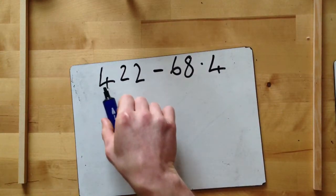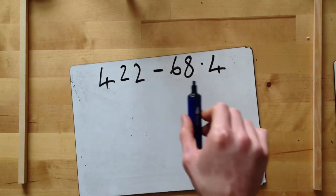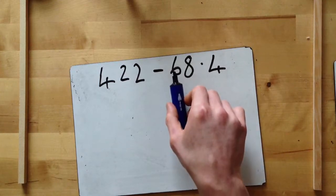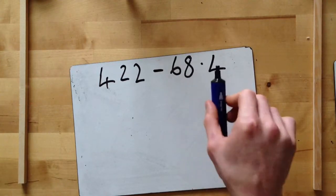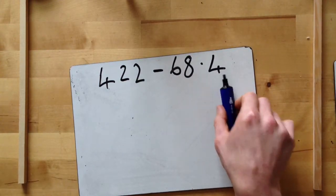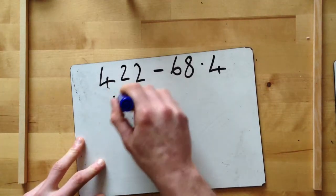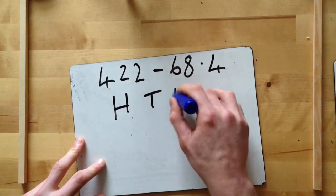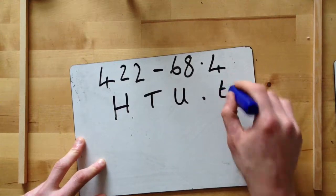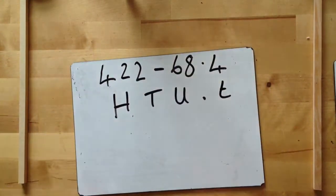So we know in the 422 we've got four hundreds, two tens, two units. In the 68.4 we've got six tens, eight units, decimal point, four tenths. So we need a column which has hundreds, tens, units, decimal point, and tenths, so these will fit directly underneath.